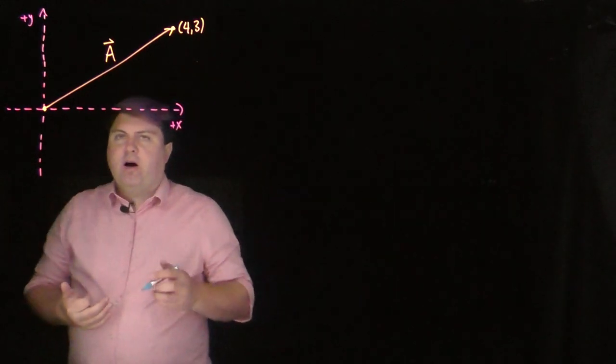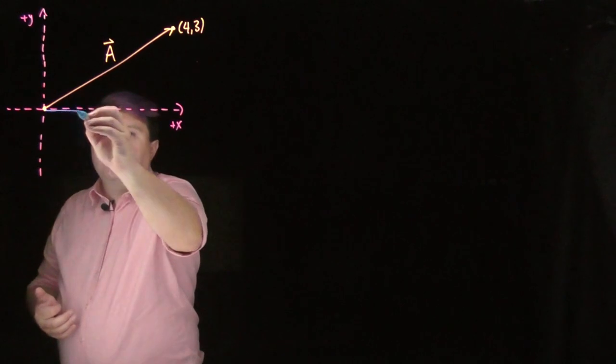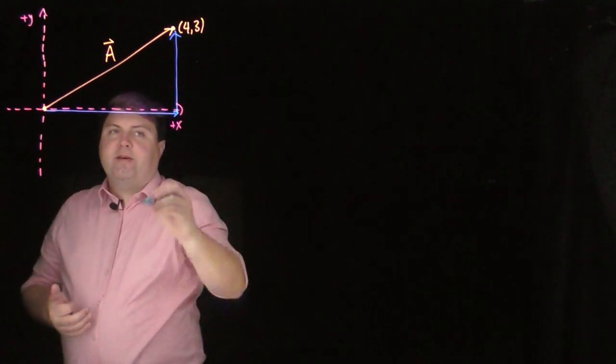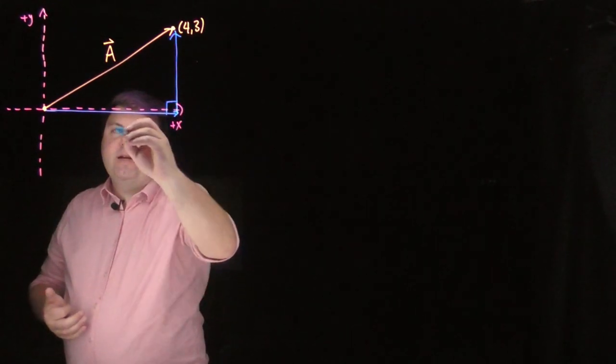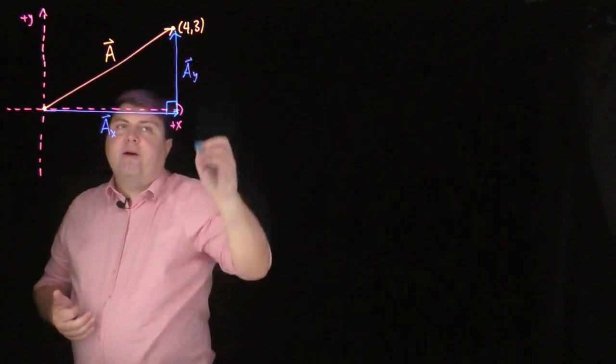One thing we can do is we can always say that this vector a is the sum of two separate vectors. So I could write one vector and another vector that are apart by 90 degrees, and I can call this ax vector and ay vector.